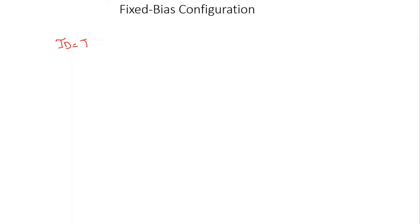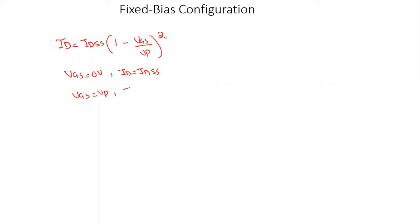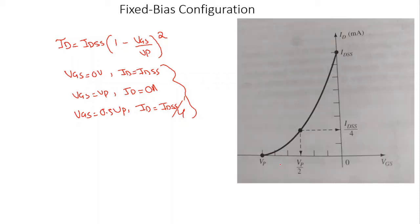For the graphical approach to finding the Q-point, the drain current is determined by the Shockley equation. Using shorthand methods, we use three important points: when VGS = 0, ID = IDSS; when VGS = VP, ID = 0 A; and when VGS = 0.5·VP, ID = IDSS/4. Based on these three points we can quickly draw the transfer characteristic curve.